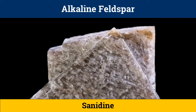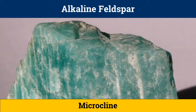Sanidine is an alkaline Feldspar and is mostly disordered, which means there is a random distribution of aluminium and silicon ions in the tetrahedral sites. It is found in extrusive, once high-temperature lavas that were quickly cooled. Microcline is another alkaline Feldspar but is mostly ordered, which means there is a regular distribution of aluminium and silicon in the silicate structure. This order is a particular characteristic of slowly cooled, deep-seated rocks and pegmatites.